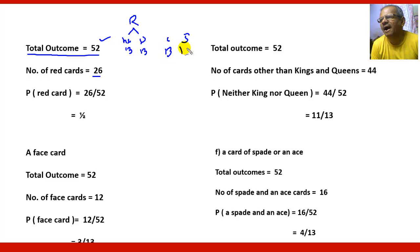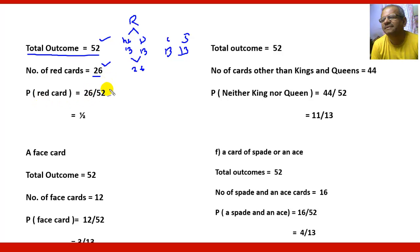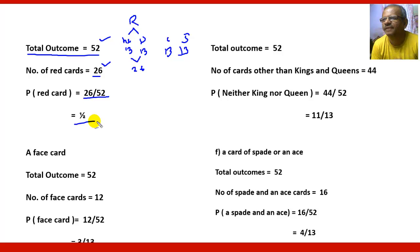Hearts are 13, diamonds are 13, clubs are 13, and spades are 13. Hearts and diamonds are red, so the total number of red cards is 26. The probability of getting a red card is 26 by 52, which equals one half. So there is a 50-50 chance of getting a red card or a black card.